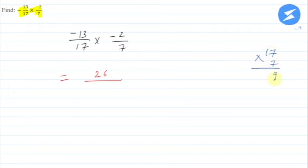7 times 7 is 49, 9 came, carry 4, 7 under 7 and 4 more, so how much will it be? 11. So this will be 119.